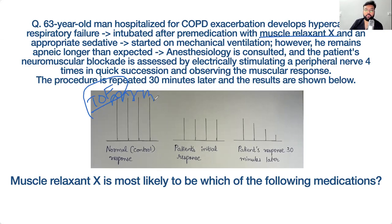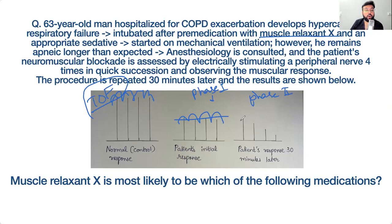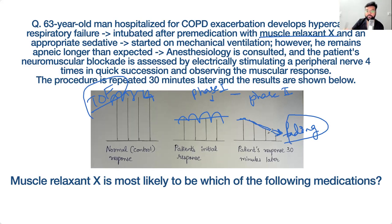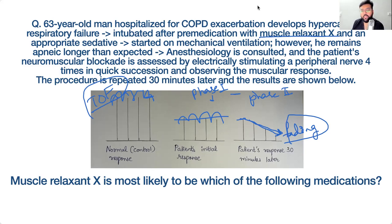When a muscle relaxant is given, there are two phases of block — phase one and phase two. In phase one, all activity is reduced: there is less muscle twitch every time you stimulate the nerve. In phase two, the muscle response progressively fades — this is called fading. The question asks: is this muscle relaxant depolarizing or non-depolarizing?